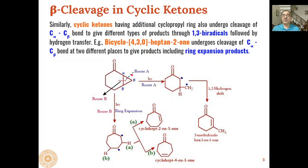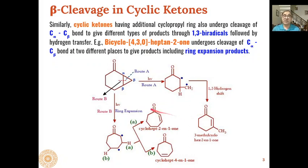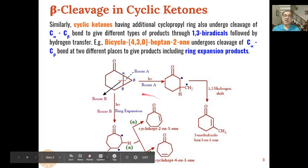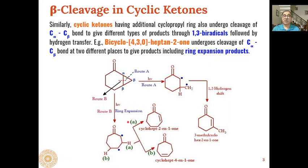If this bond breaks from one position, we get products through route A, whereas if it breaks from the other position, we get products through route B. Route A leads to the formation of alpha-beta unsaturated ketones, as seen previously, whereas route B leads to ring expansion products.